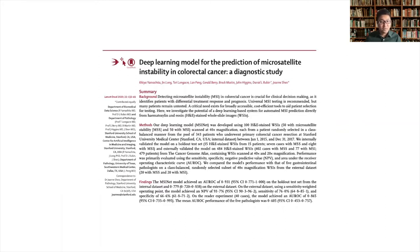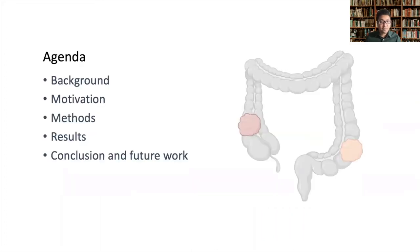I'm presenting a recent paper on a deep learning model for the prediction of microsatellite instability in colorectal cancer — a diagnostic study. This paper is about developing a deep learning-based system that classifies colorectal cancer into two distinct subtypes based on microsatellite status using whole slide images. Today I will first touch on the background and motivation of this study, then jump into our analysis method and results, and finally conclude with ideas for future work.